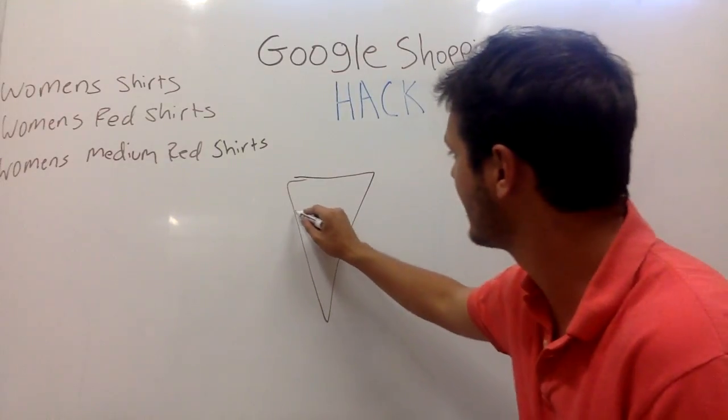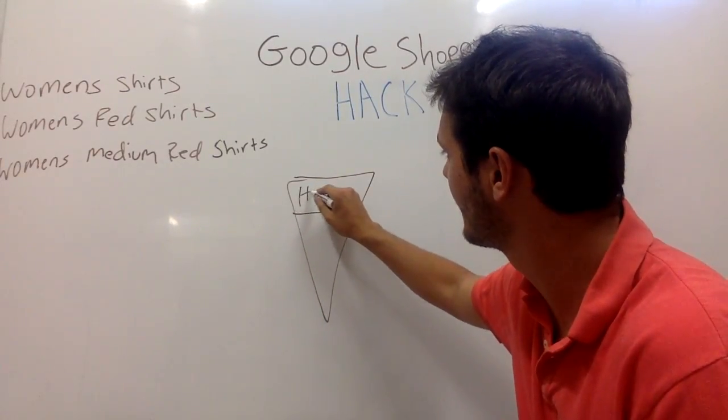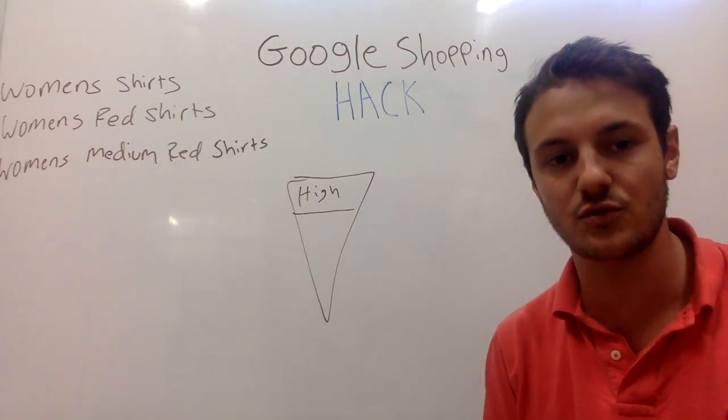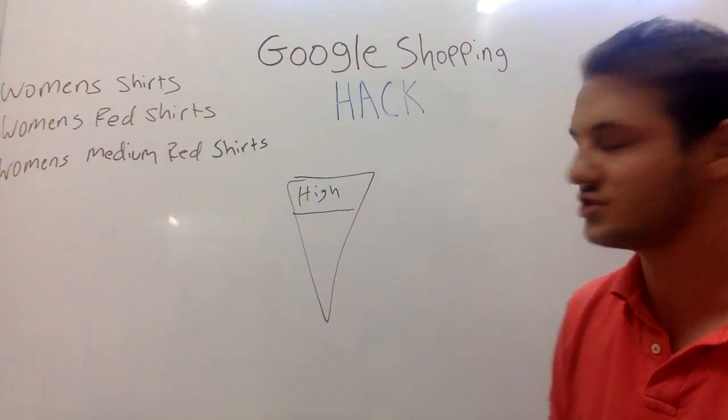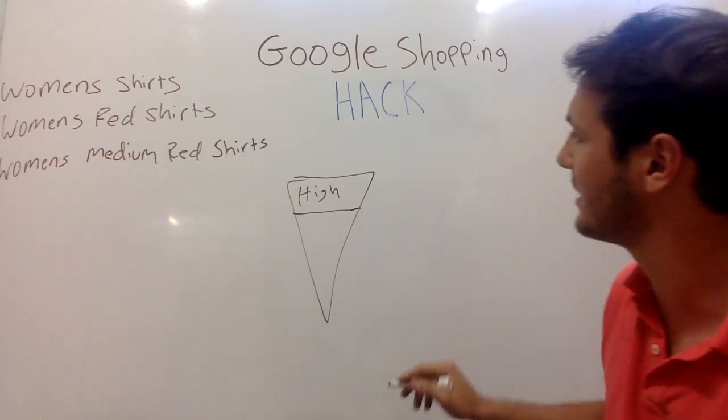You'd want to have a high priority campaign first, and in order to set the priorities in Google Shopping you just go to the settings and there should be a setting for priority level. So you want to have a high priority shopping campaign.